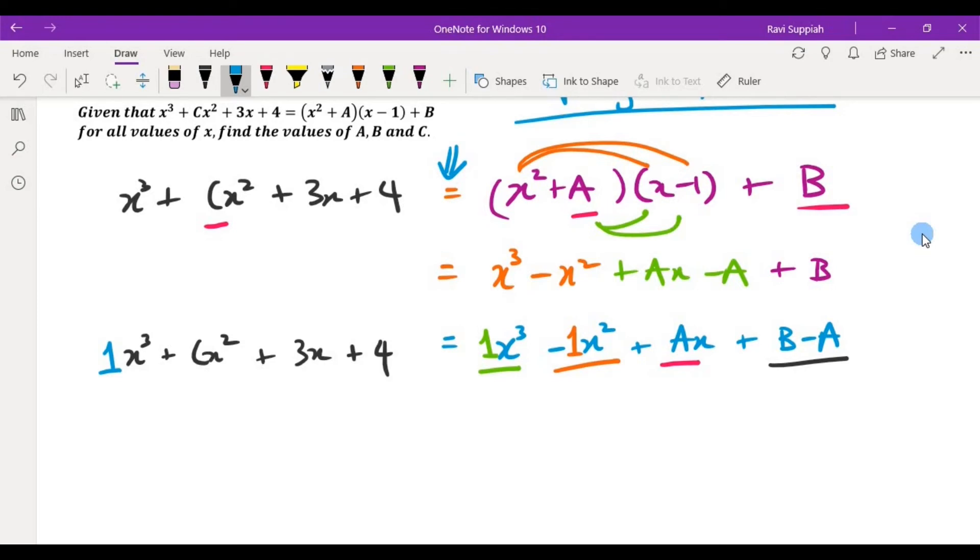Now for the x squared, what do you see? The coefficient of x squared on the left hand side is c. On the right hand side is minus 1. So therefore, c is equals to minus 1. That is the first unknown we have solved.